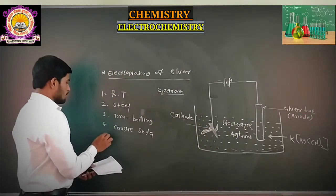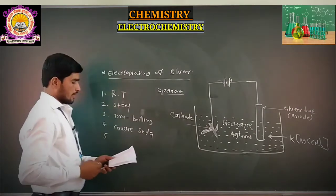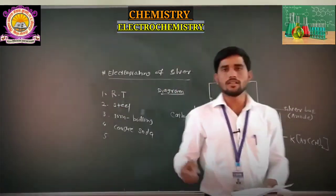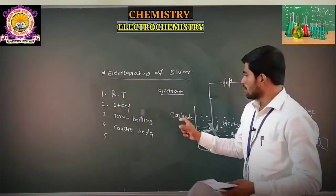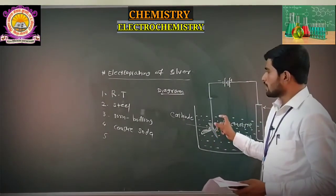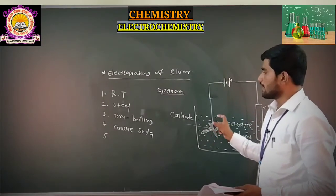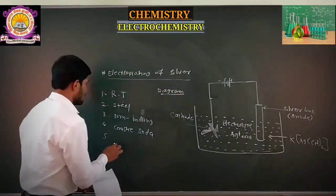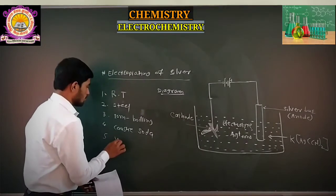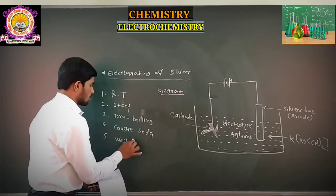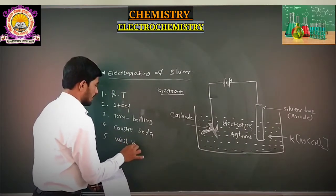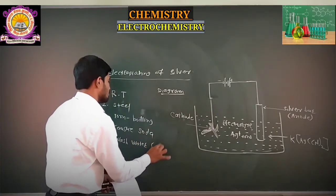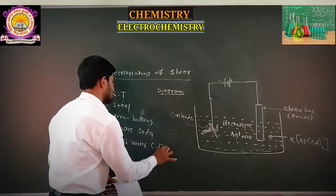The electroplated article is then washed by means of water — here we use distilled water — to remove any remaining impurities from the surface.